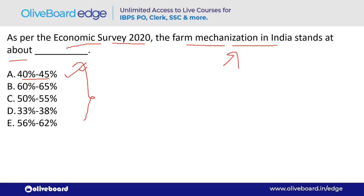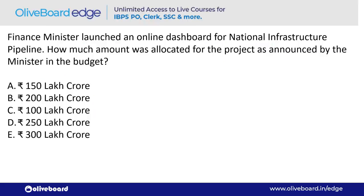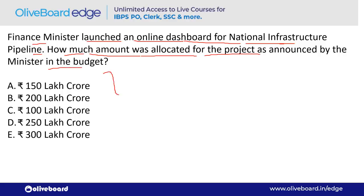Finance Minister Nirmala Sitharaman launched an online dashboard for the National Infrastructure Pipeline. How much amount was allocated for the project as announced in the Budget? The answer is ₹100 lakh crore — option C.